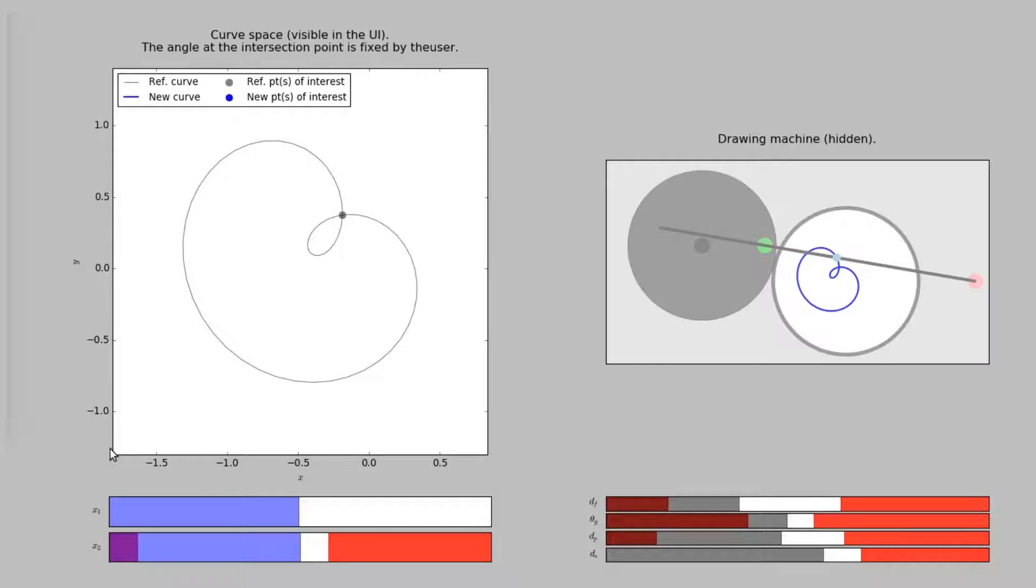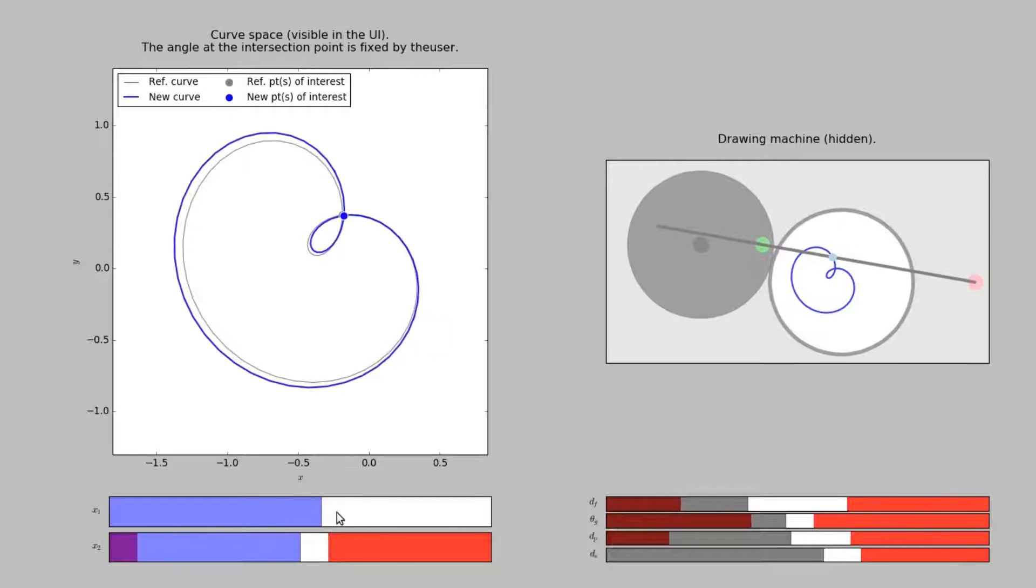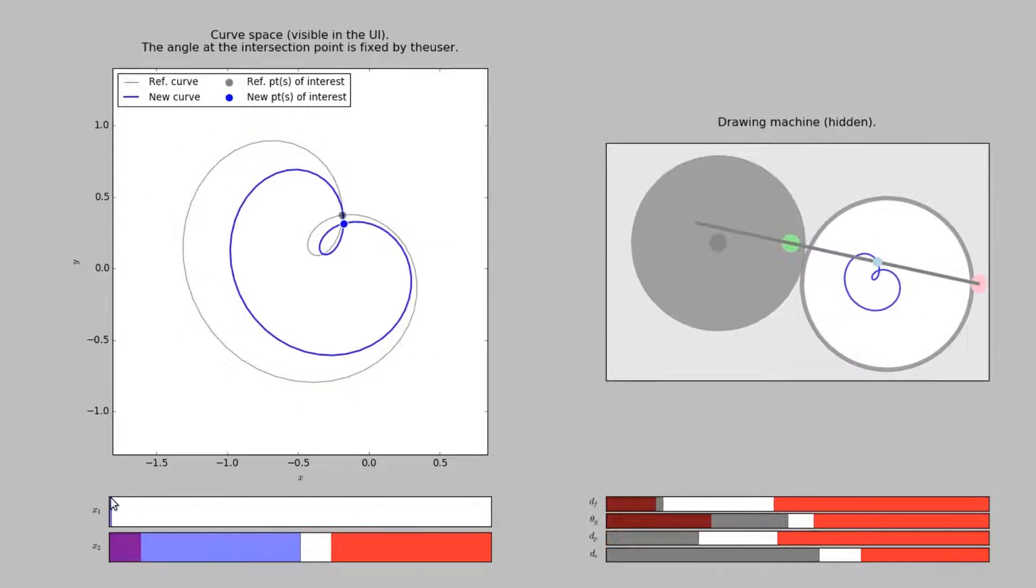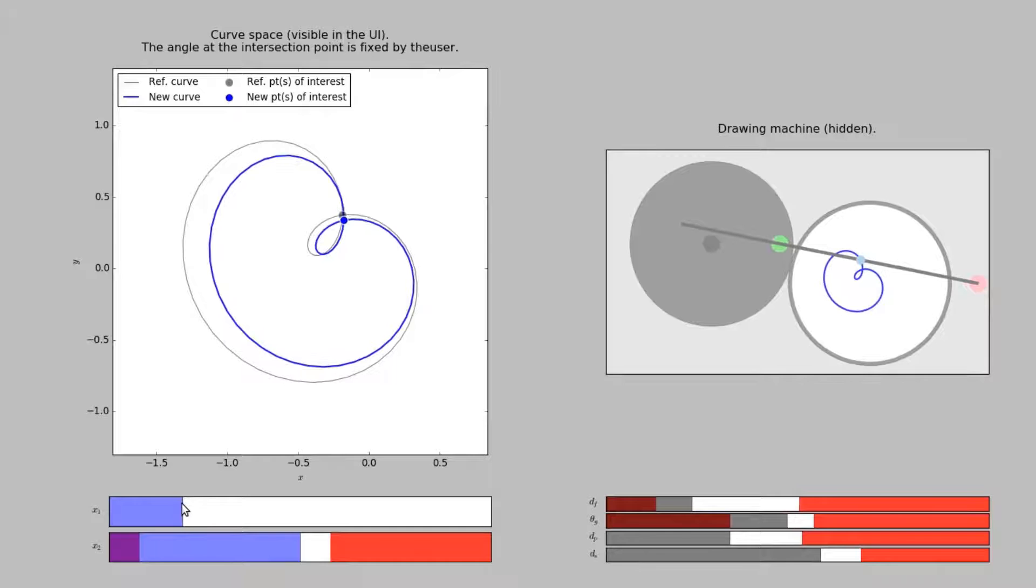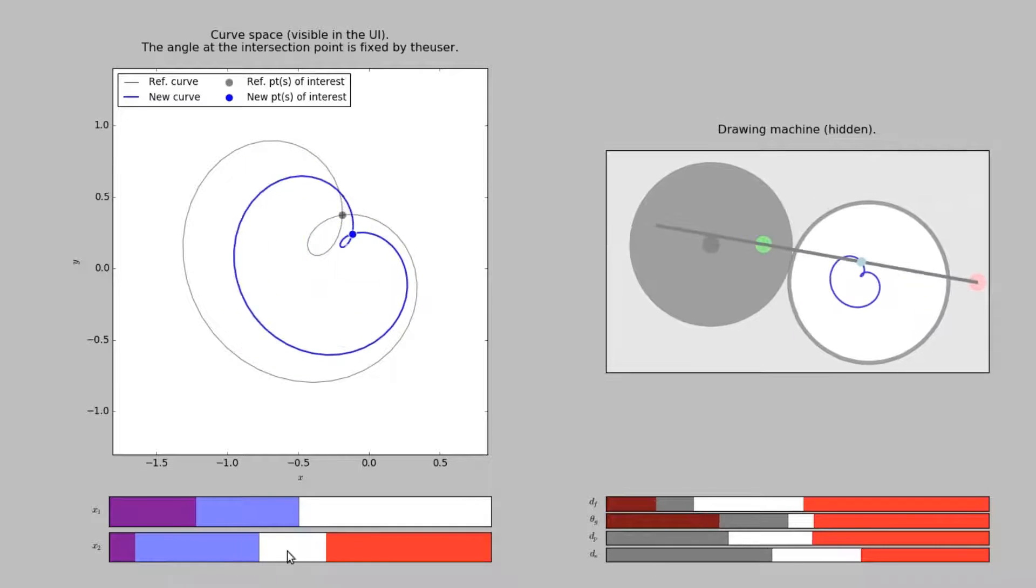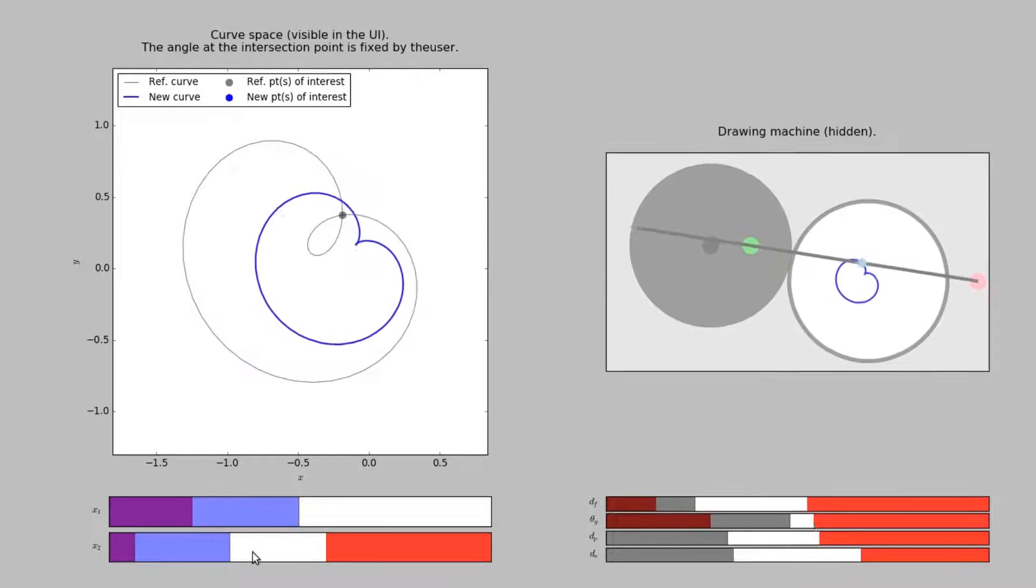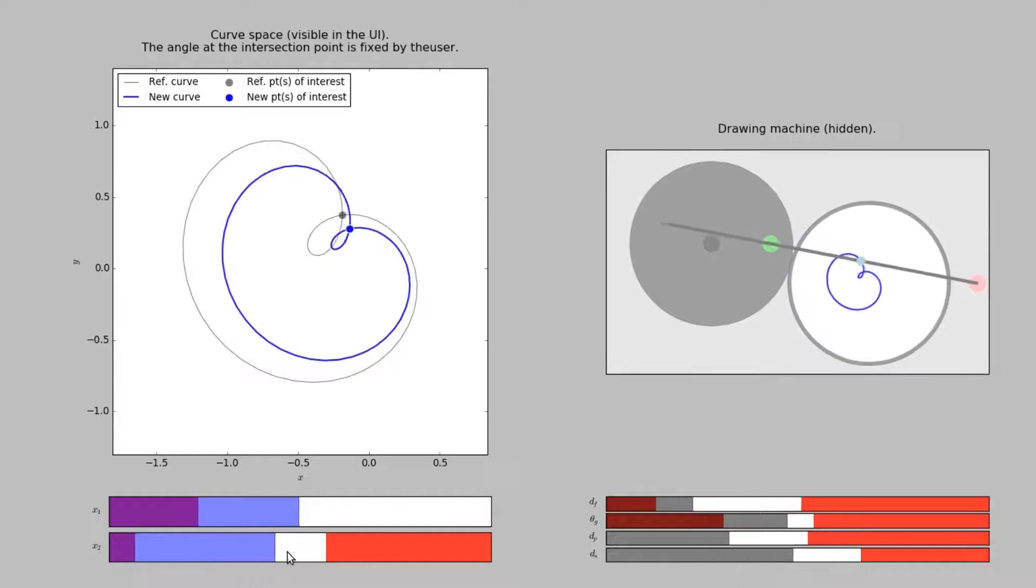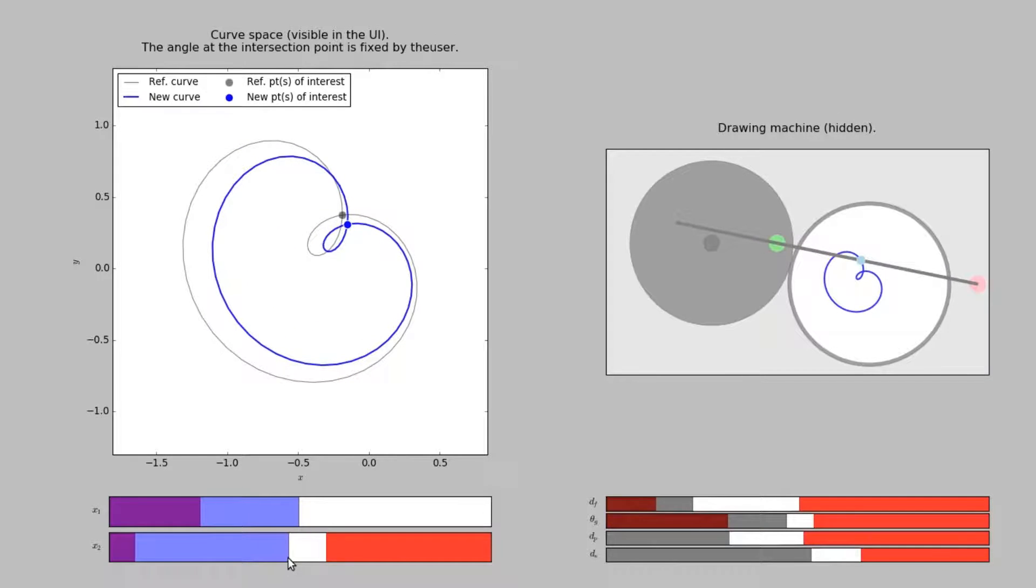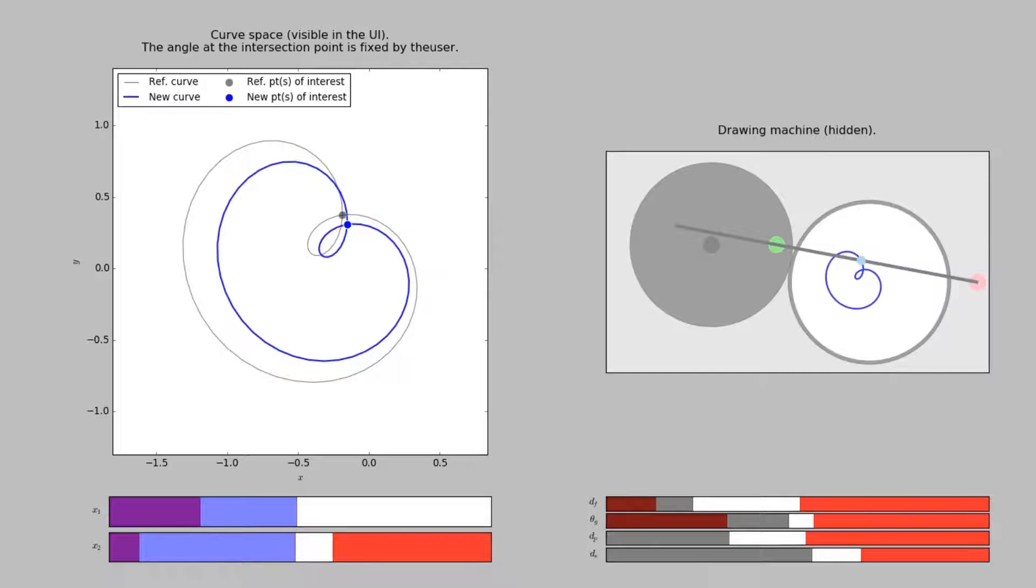To this end, we propose a system that allows the user to define her own constraints directly on the curve. Here, fixing the angle of intersection provides a better interaction. Indeed, the size of the heart and the relative size of the loop can be controlled separately while preserving the symmetry of the shape.